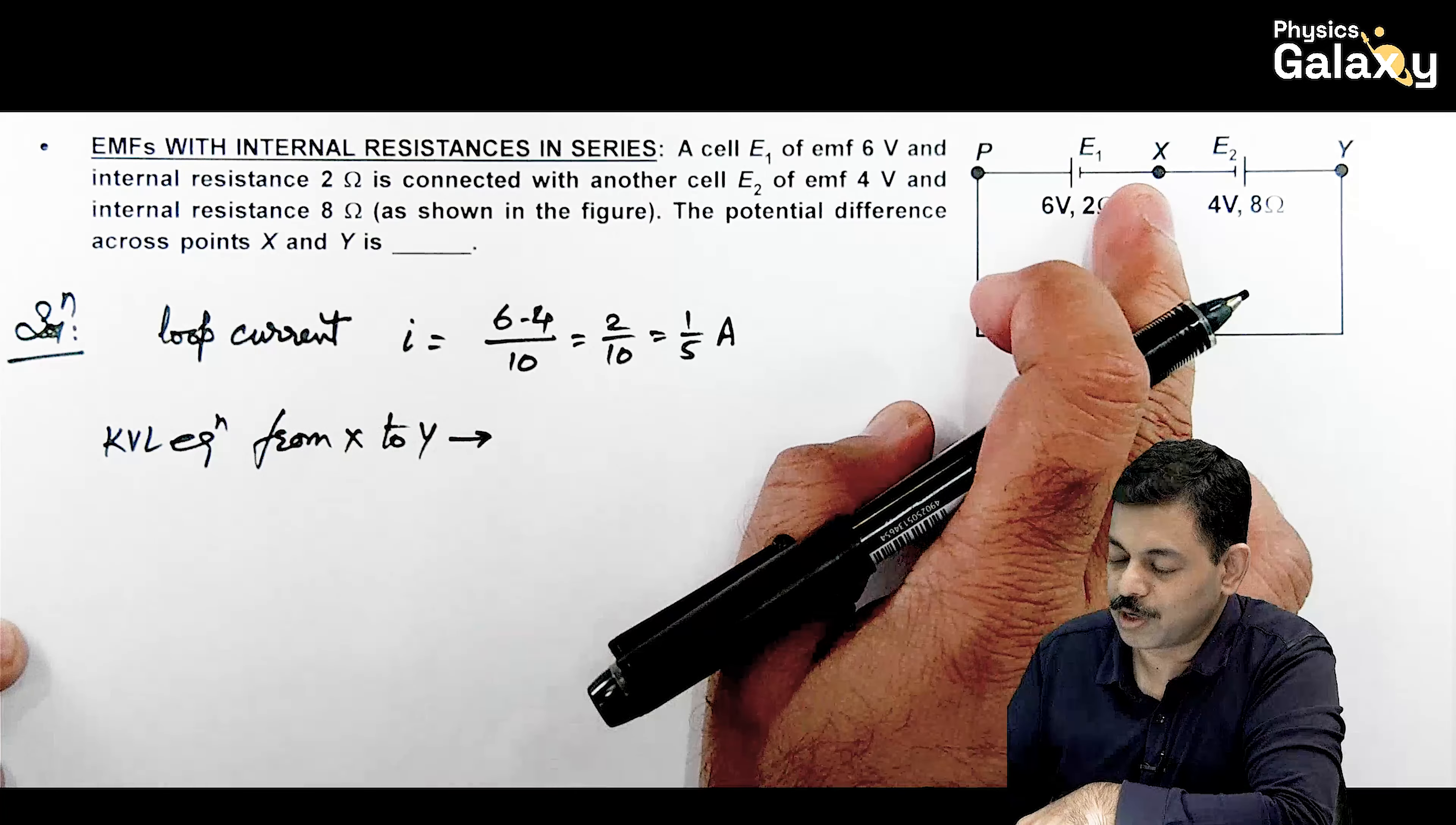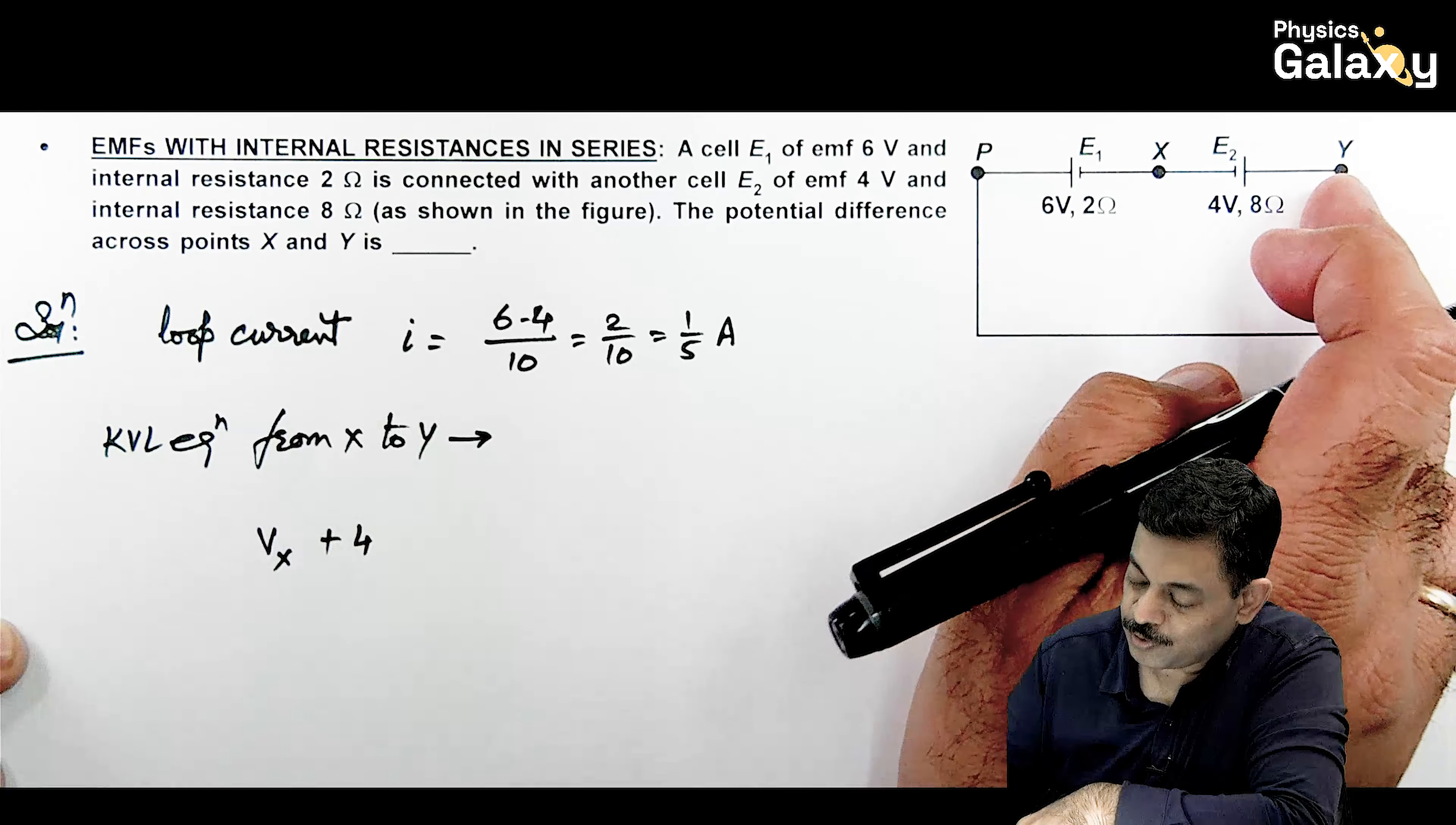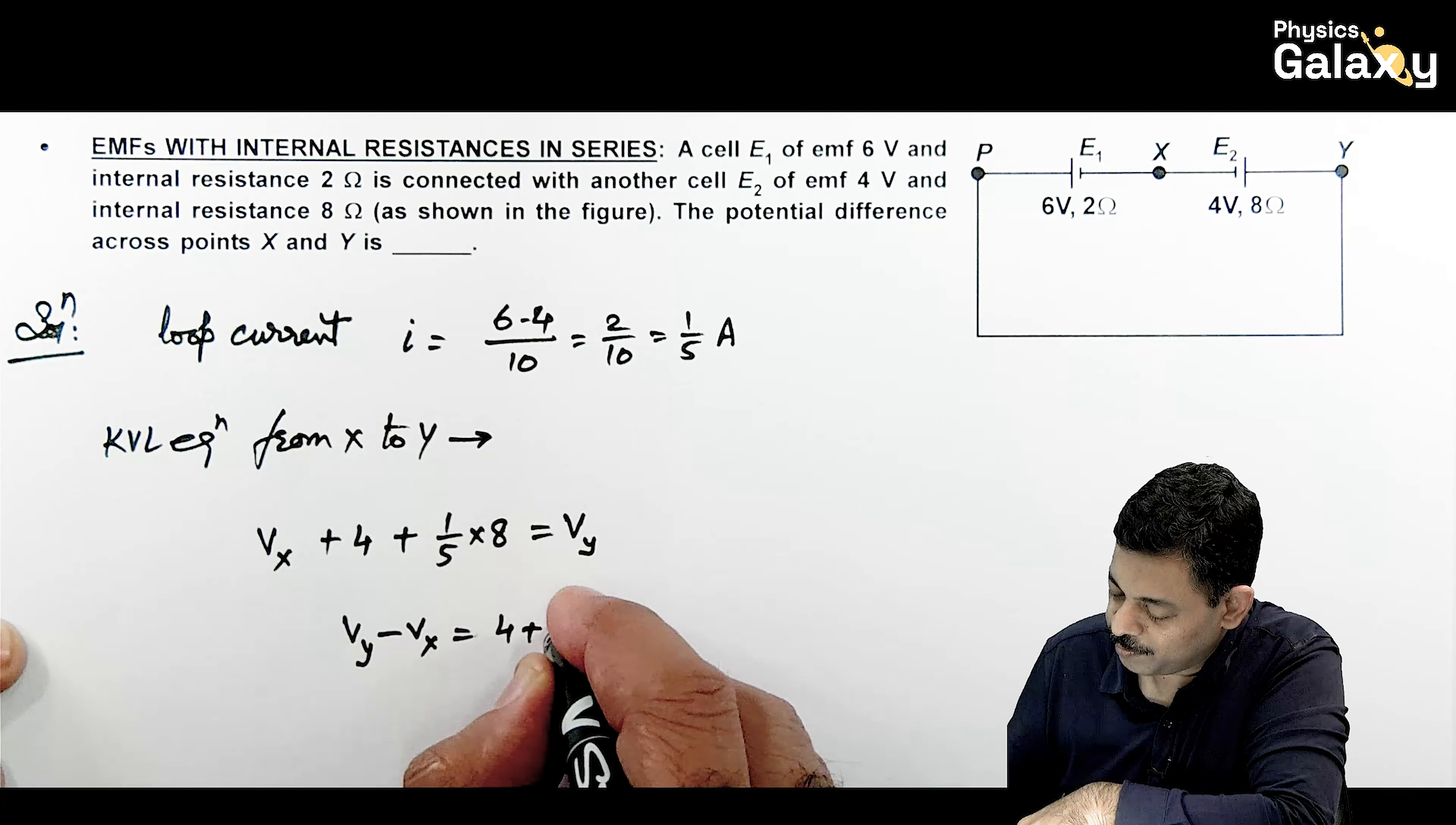We can write KVL equation from X to Y. That gives us the potential difference between X and Y. So here if we start from X, this is VX plus 4 volts. And the current is coming from Y to X. The potential drop across 8 ohms is from right to left. So it will gain as we are going from left to right.